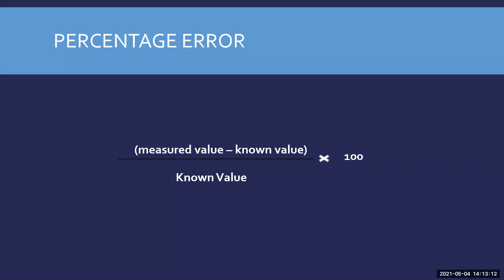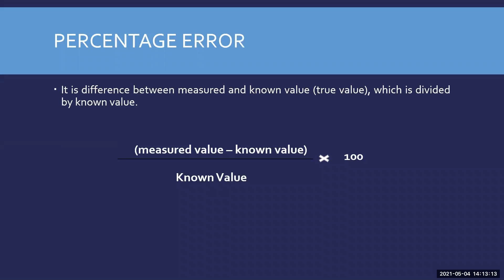Percentage error is the difference between the measured value and the known value — that is the true value — divided by the known value, multiplied by 100. So the formula is: percentage error equals measured value minus known value, divided by known value, into 100.